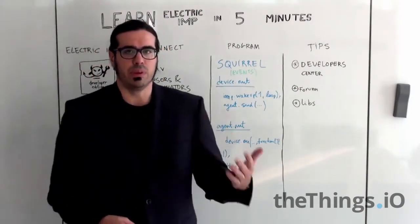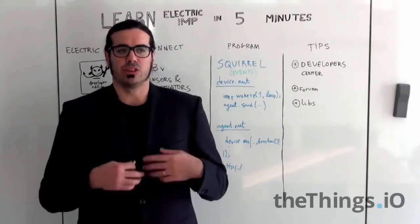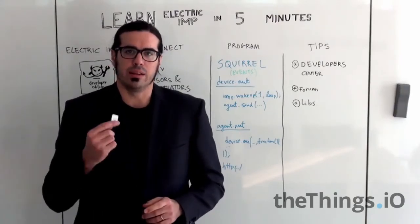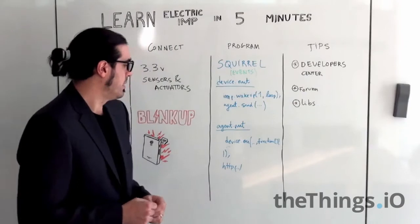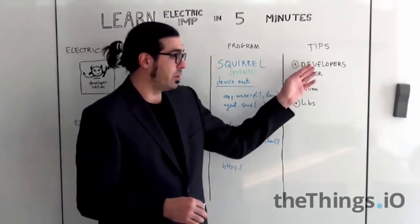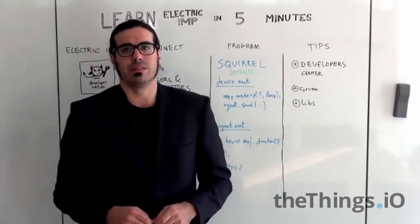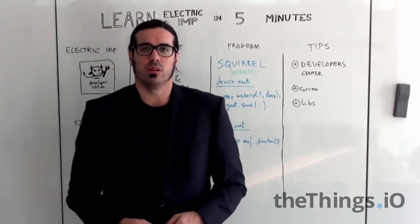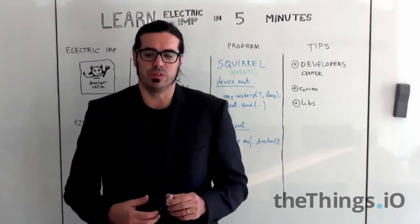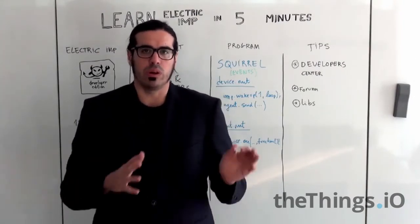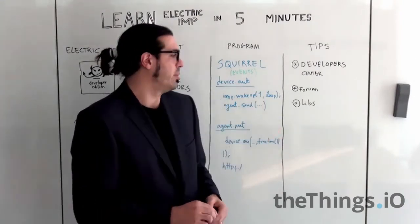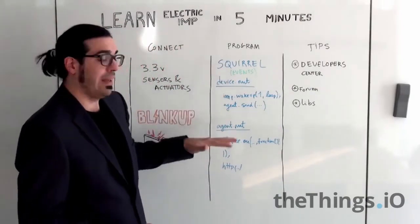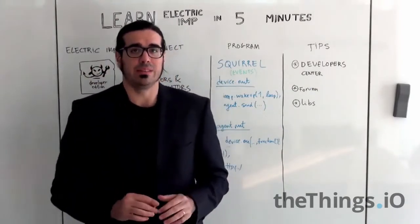On the agent you have HTTP libraries that actually let you do whatever you like with the data that you are getting from the devices. Yeah so some tips, the developer center is amazing. There is a lot of information. You can learn how to program Squirrel on the developer center of ElectricIMP. So if you don't have any clue about Squirrel don't worry, go there and just learn about Squirrel, about how this device and agent thing works. It's very easy.